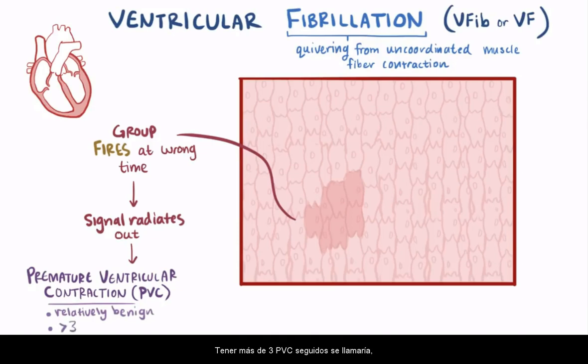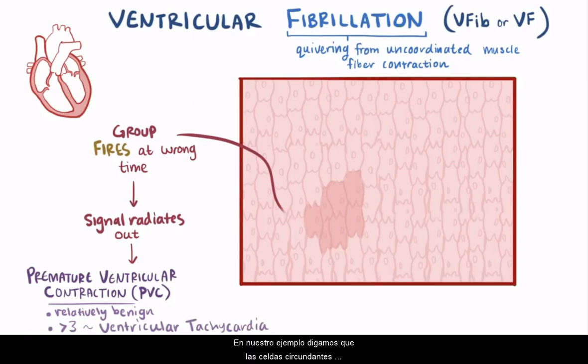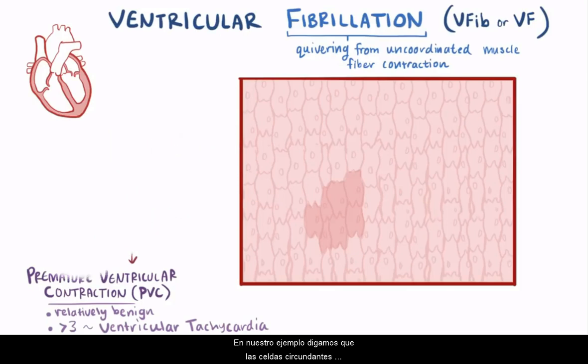Having more than three PVCs in a row would be called ventricular tachycardia, and ventricular tachycardia can sometimes progress to ventricular fibrillation.